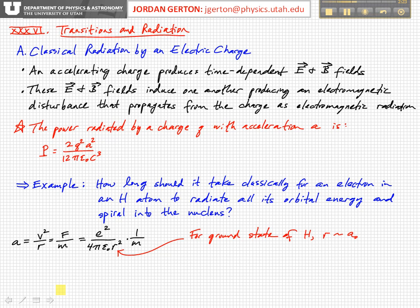If we think of an electron classically as just a particle that's orbiting the nucleus like a planet, then it's in constant acceleration because it's undergoing centripetal acceleration, and so it should radiate classically all its orbital energy and eventually spiral into the nucleus as it loses energy.